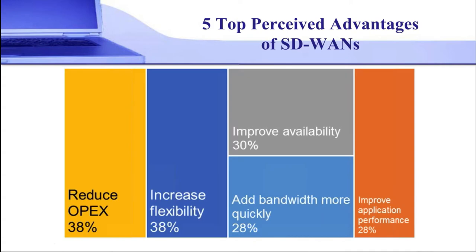I asked people what they see as the key advantages of SD-WAN. It's fascinating that these perceived advantages match up really well with the factors driving people to change. The number one factor driving change was to reduce costs, and the number one perceived advantage is to reduce OPEX. Improved availability is also listed, matching it as one of the key pain points. The perceived advantages of software-defined WANs closely align with the pain points people are experiencing with their current wide area networks.